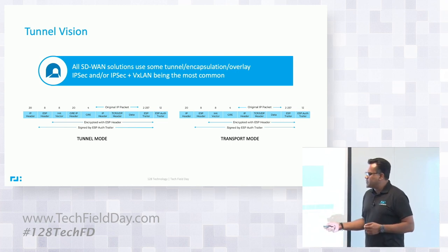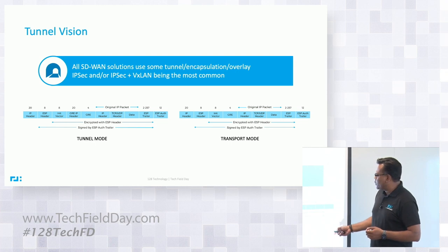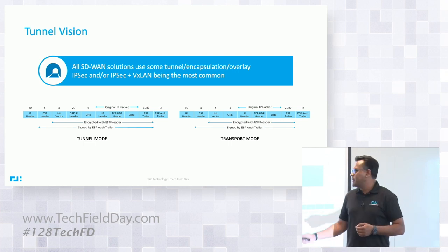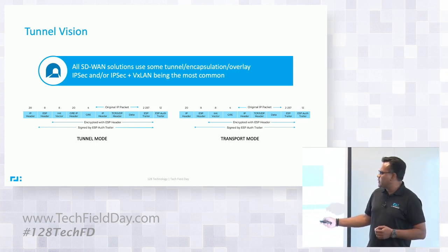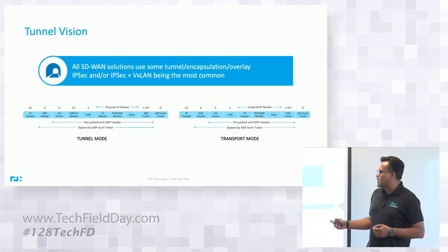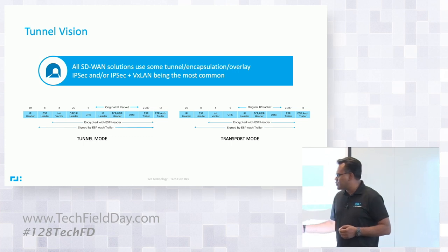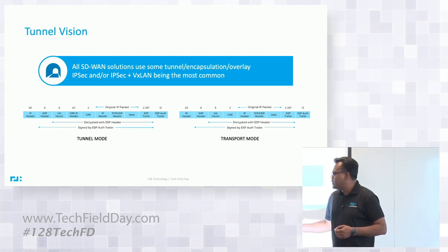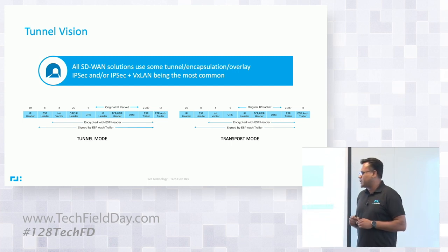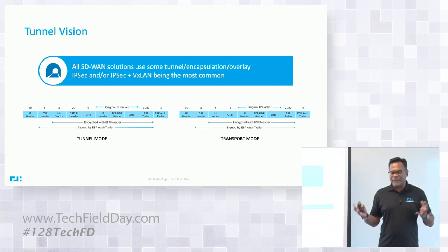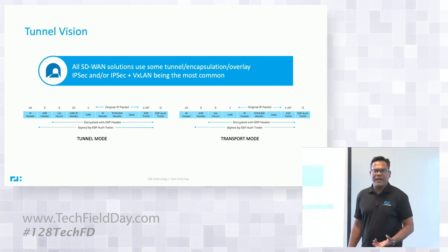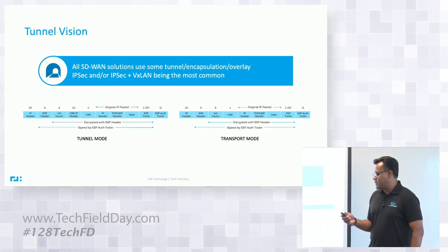If you have tunnel mode for IPsec, the original packet size remains the same, plus you add all of these overhead bytes. In our case, we only NAT the packet — we're only NATing the IP header. We do not add full headers in our scenario. We don't encapsulate the packet, which means we don't add a full IP header per packet. That is what leads to the bandwidth savings.